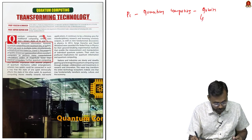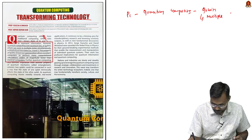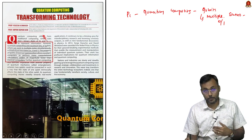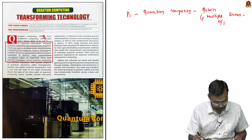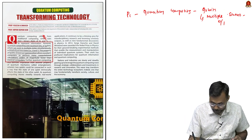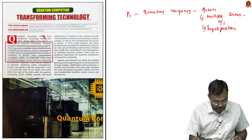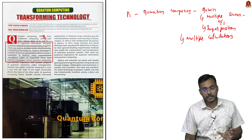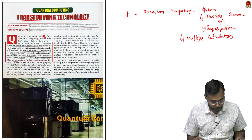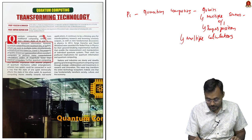Qubits involve multiple states — that is, multiple states of existence of 0 and 1. In normal computing it is always binary: 0 and 1. In quantum computing there are multiple states of 0 and 1, which is called superposition. The biggest advantage of this is the ability to perform multiple calculations simultaneously, resulting in faster computing.